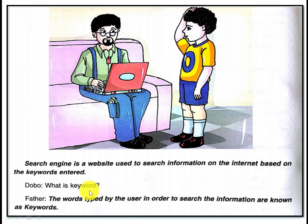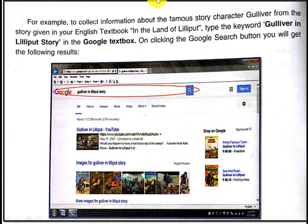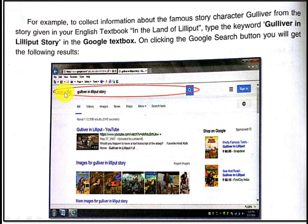Dobo asks: what is a keyword? Father says: the words typed by the user in order to search for information are known as keywords. For example, if Dobo wants to search the story of Gulliver in Lilliput, that is the story Dobo wants to search. He would go to the Google search website and write those keywords.